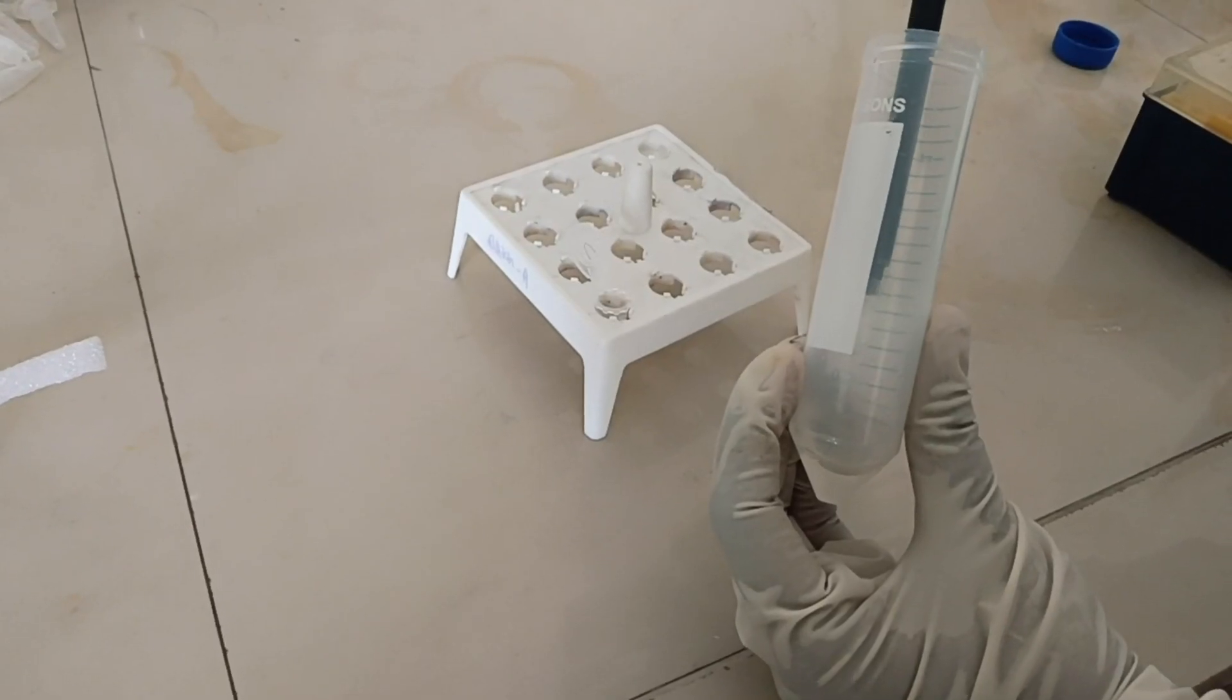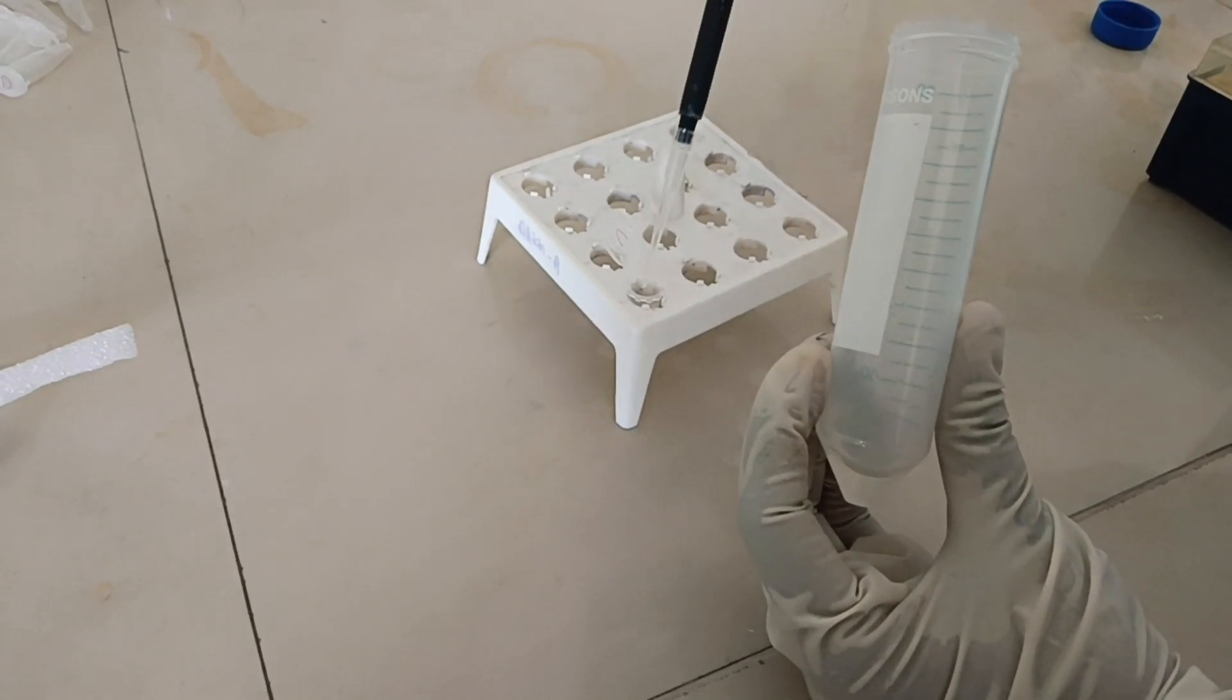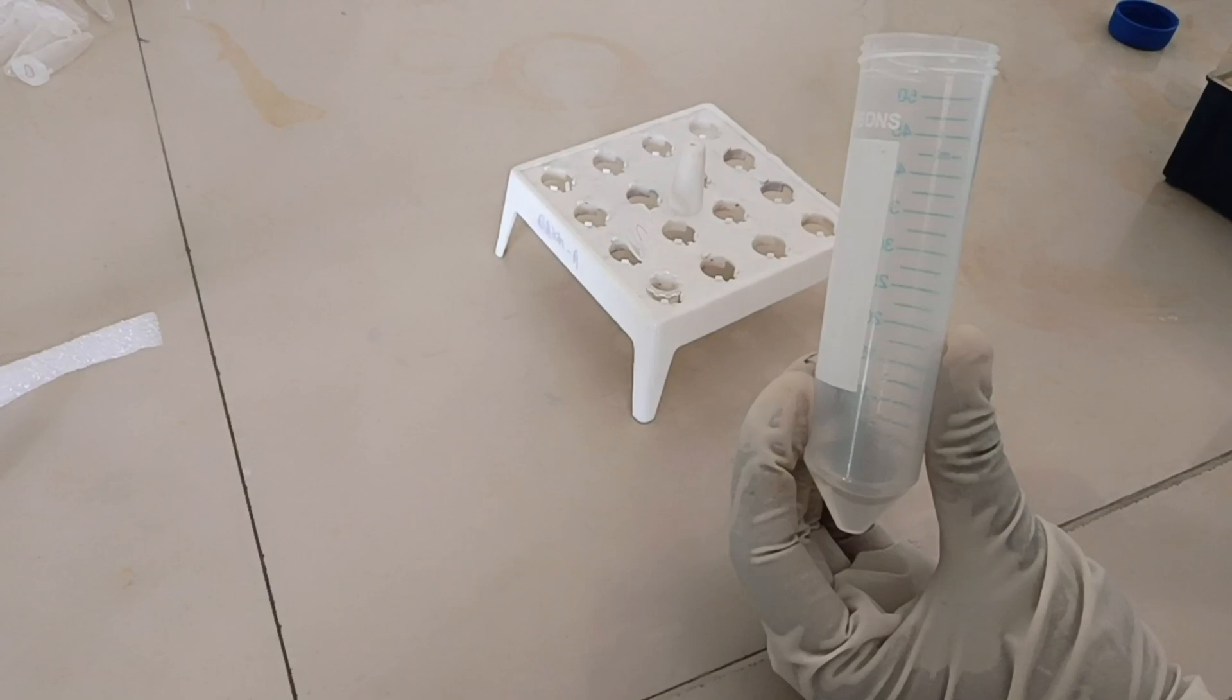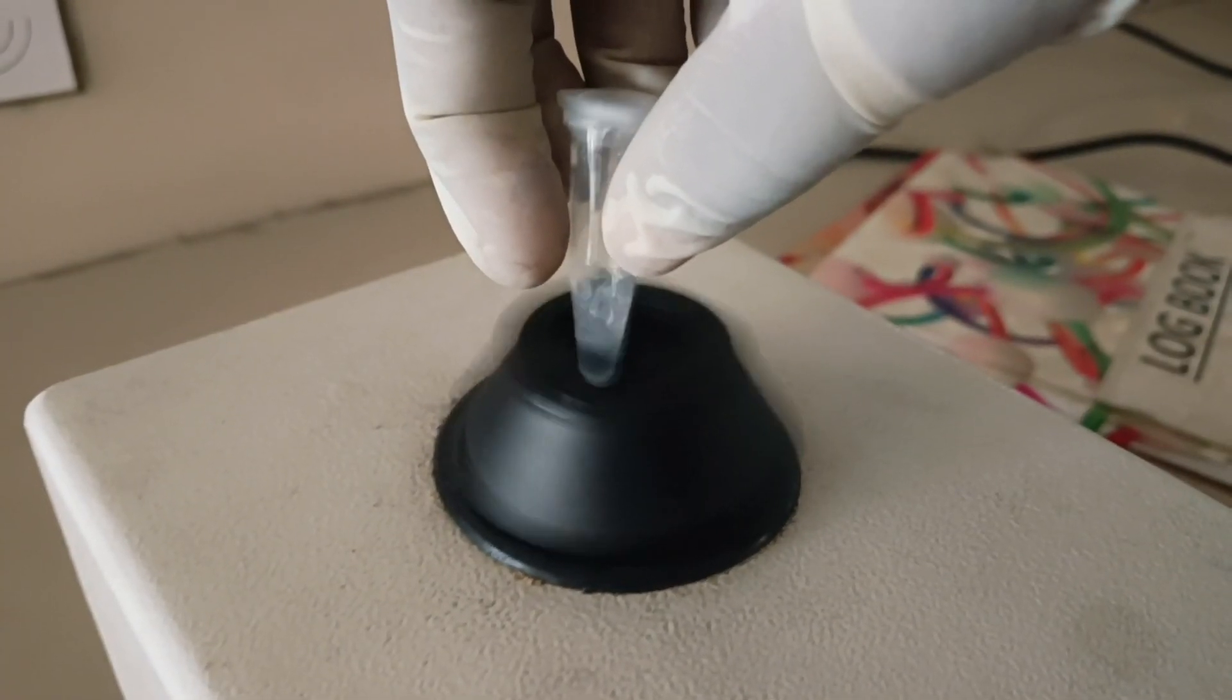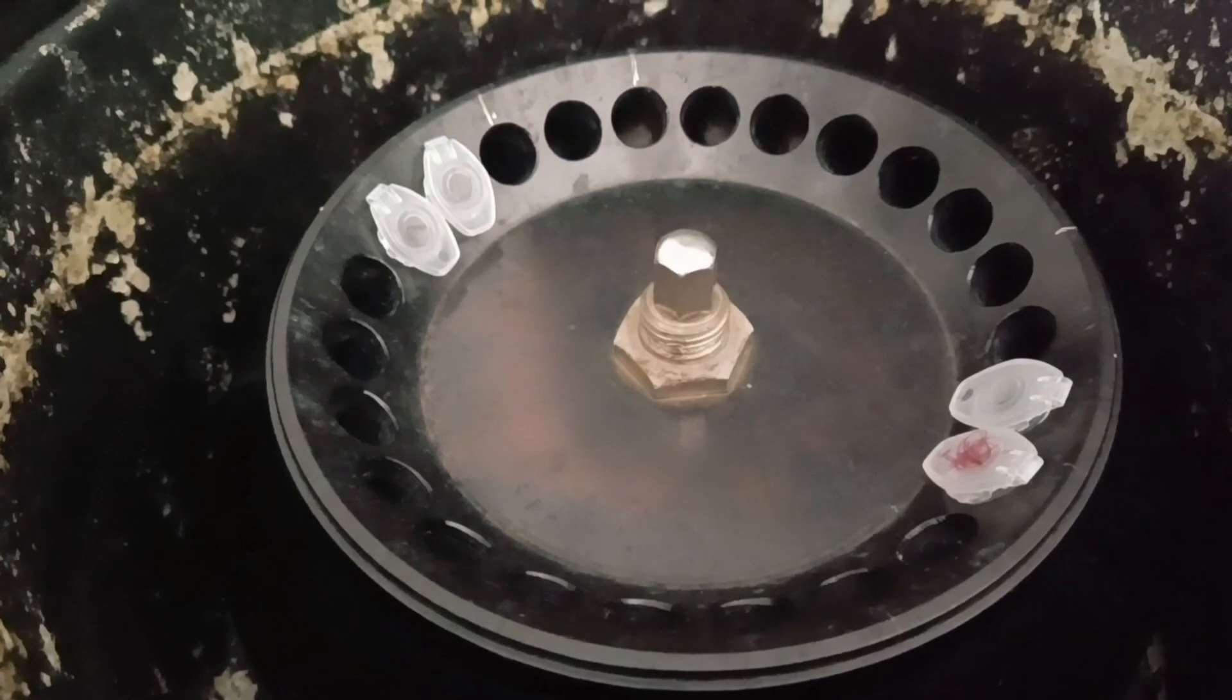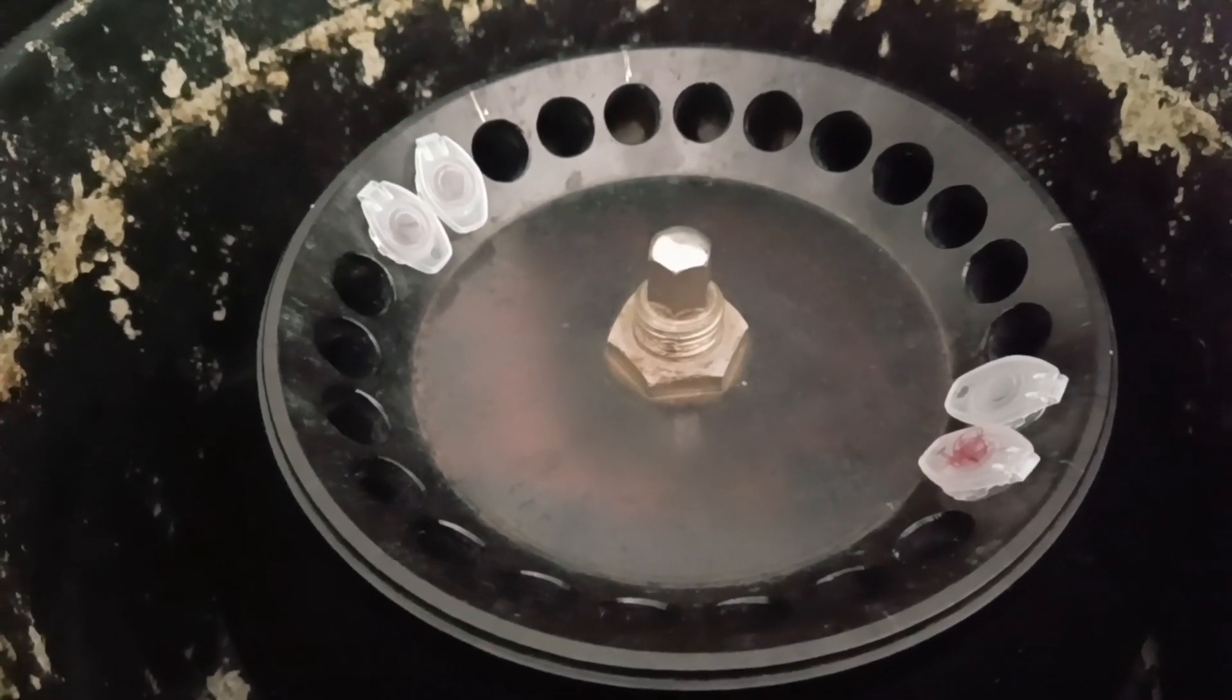After 1 hour of incubation, add equal volume of PCI, i.e. phenol chloroform isoamyl alcohol. Vortex the tubes until it gets completely mixed. Centrifuge the tubes at 10,000 rpm for 10 minutes.